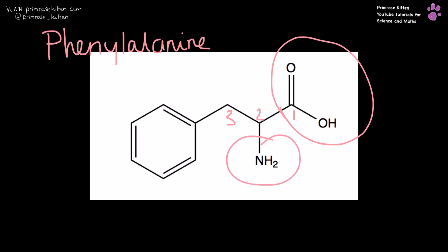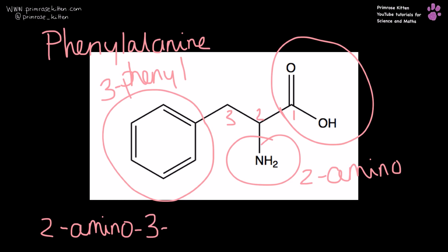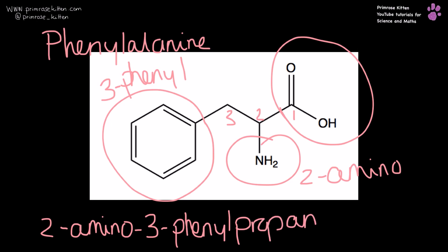Here is our carboxylic acid group — one, two, three — this gives us a 2-amino and a 3-phenyl, making it 2-amino-3-phenylpropanoic acid.